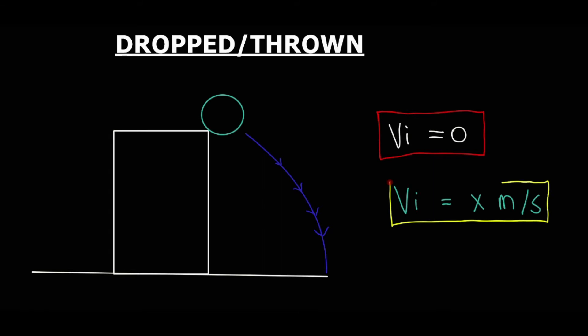Generally, if the ball is dropped, the initial velocity is zero. But if the ball is thrown, then there will probably be an initial velocity.